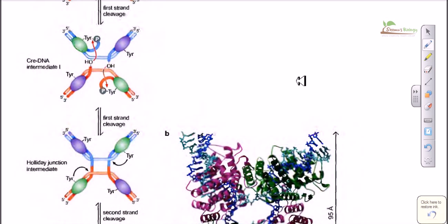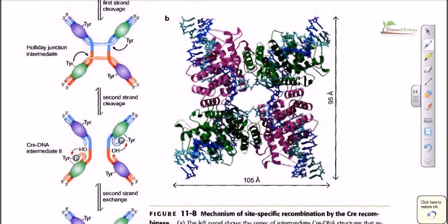In CRE-LOX recombination, the enzyme is called the CRE protein, and it has a distinct site for binding both strands of the DNA. The site on the DNA where the CRE protein binds is called the LOX site — hence the name CRE-LOX recombination. This system resembles the tyrosine recombinase system but differs in several important ways. CRE-LOX recombination is commonly found in phages, such as bacteriophage T4. If you have questions, feel free to send me a message. Thank you, bye.